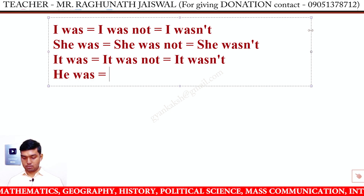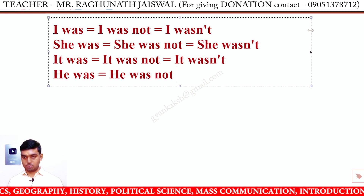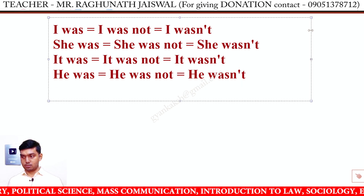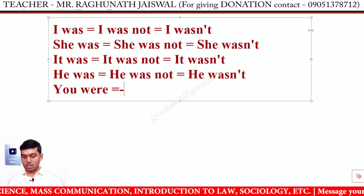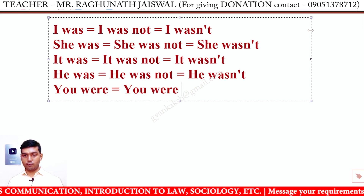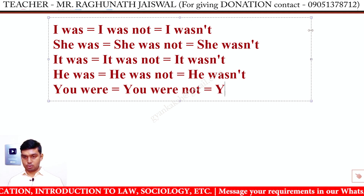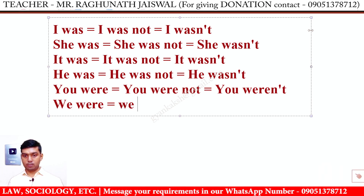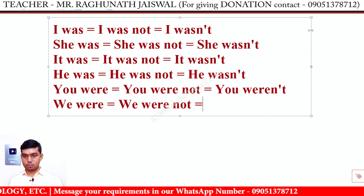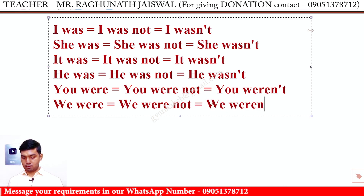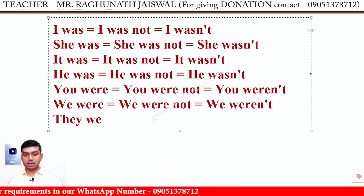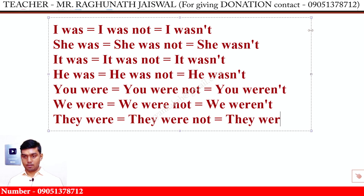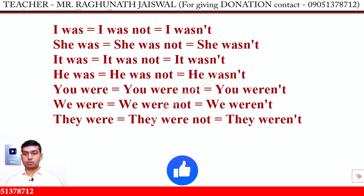He was — he was not, short form 'he wasn't'. You ke saath 'were' hota hai — 'you were not', short form 'you weren't'. We ke saath 'were' hota hai — 'we were not', short form 'we weren't'. They ke saath 'were' hota hai — 'they were not', short form 'they weren't'.